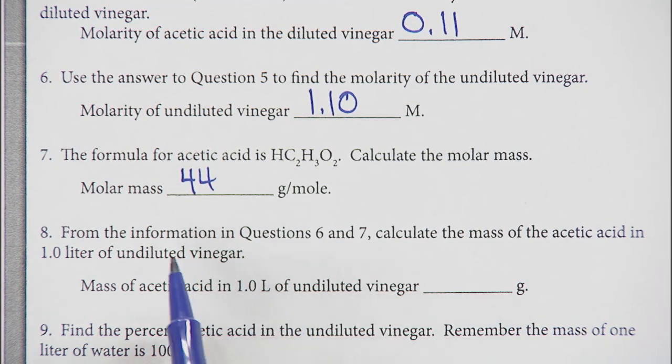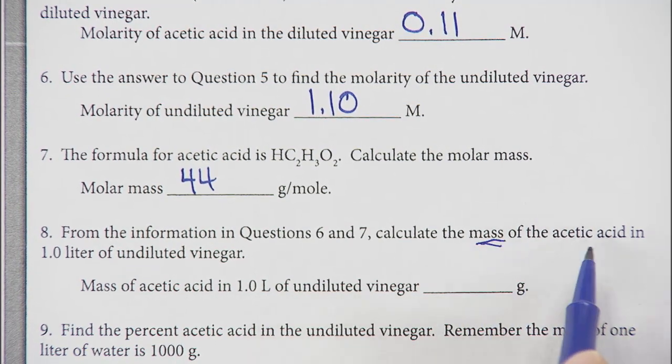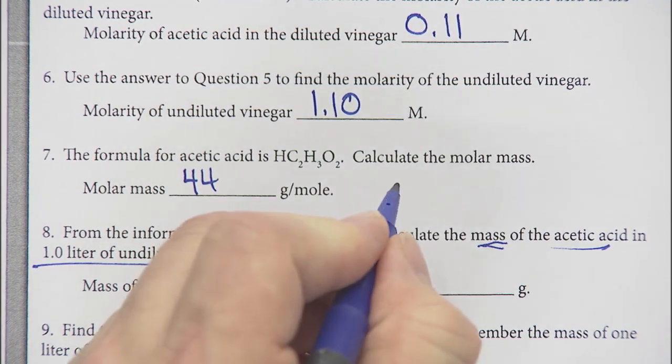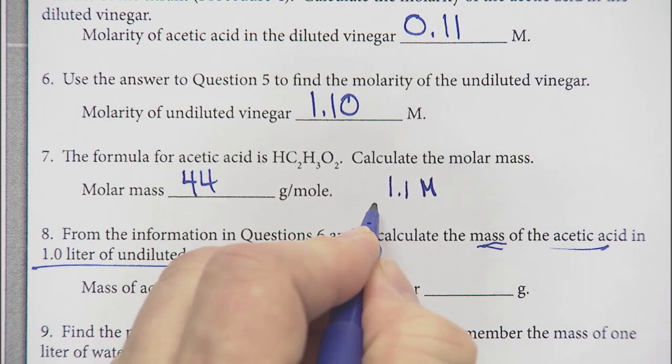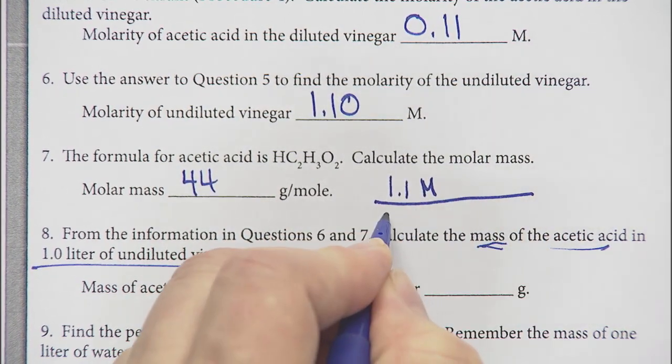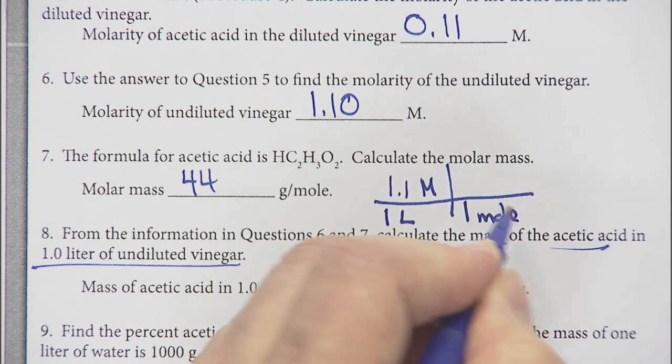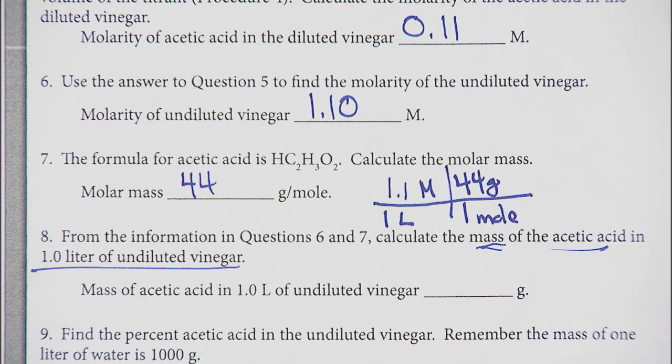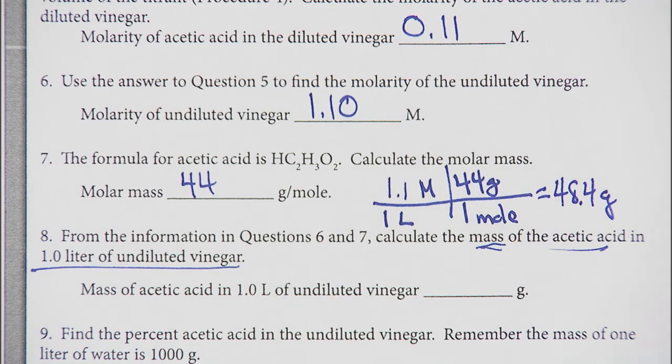I want to figure out the mass, the grams of acetic acid in 1 liter of vinegar. I know my concentration is 1.1 moles per 1 liter, and I know that 1 mole is 44 grams. So that's 48.4 grams in a liter.